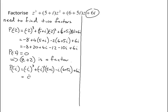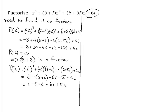So that becomes minus (5 plus i), and minus i gives minus 6i. Minus 5i squared — minus times minus makes plus — gives plus 5, plus 6i. So that becomes i minus 5 minus i minus 6i plus 5 plus 6i, and that equals zero. So z minus (minus i) — that is, z plus i — is also a factor.